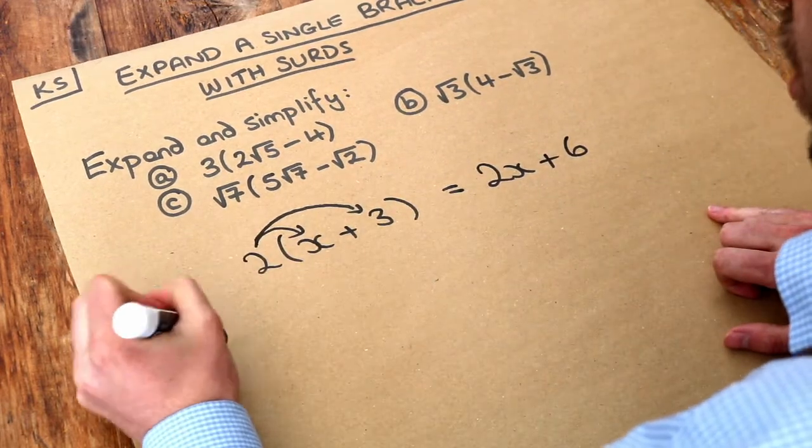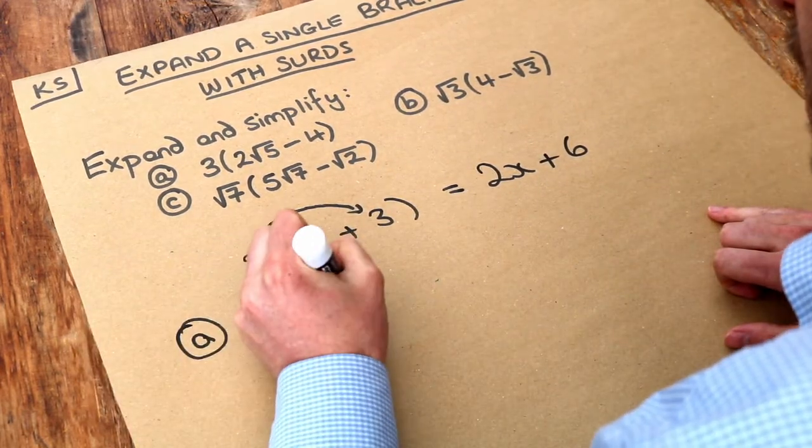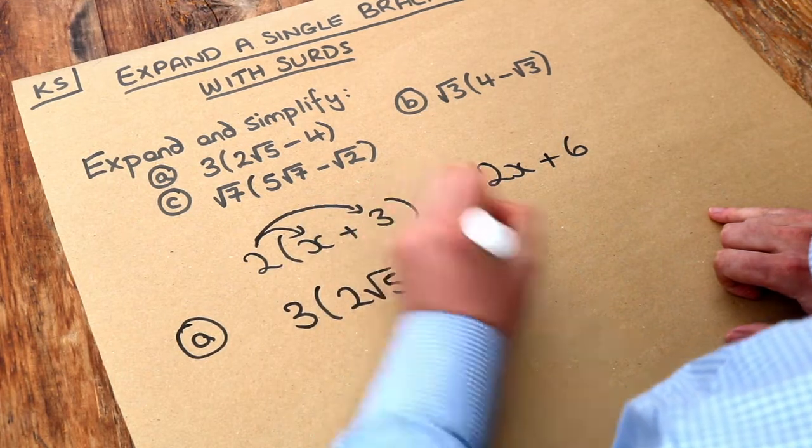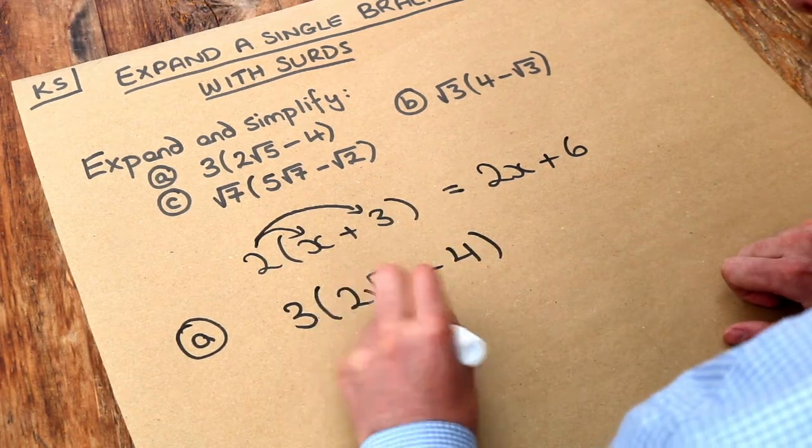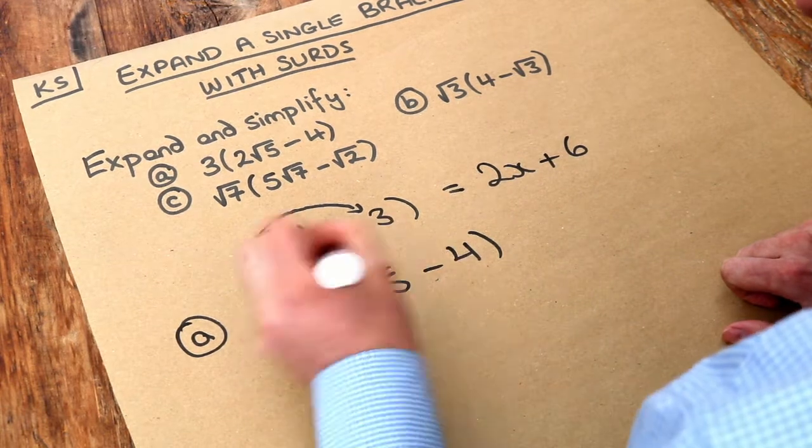And the same is true here. So we can use our knowledge of multiplying surds to achieve this. So we do the 3 times the first thing and the 3 times the second thing.